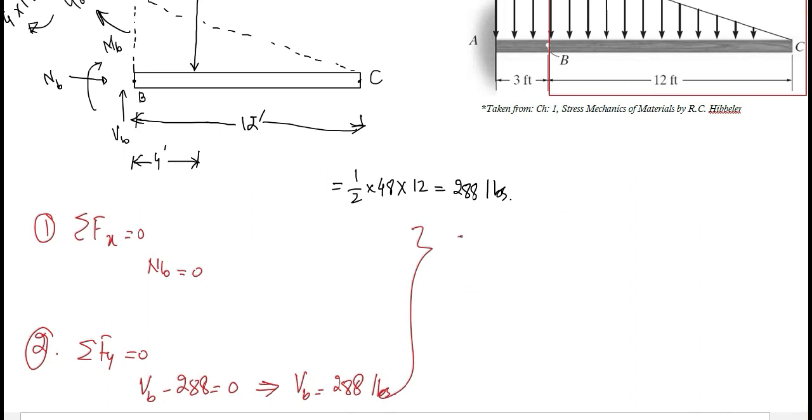Now applying the third condition of equilibrium: summation of all moments acting at any point equal to 0. If I consider that point as B point, then the moments at point B would be, if I consider the clockwise moments as positive, one would be due to the 288 pounds and it will have the clockwise moment around point B.